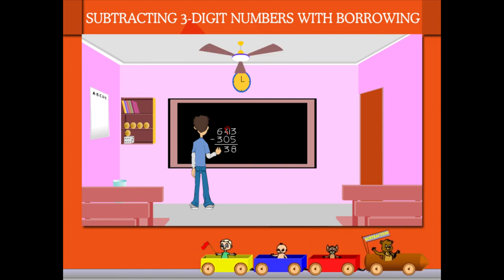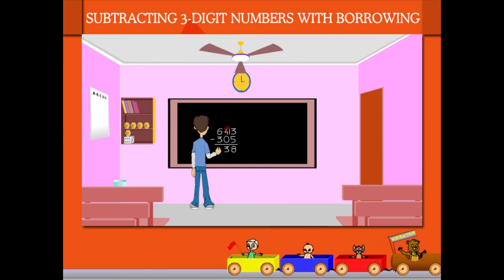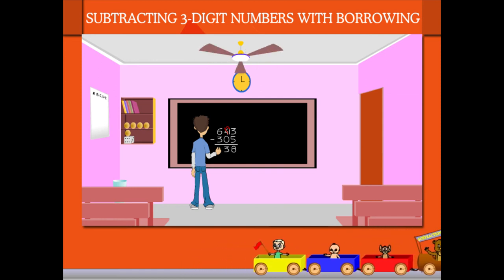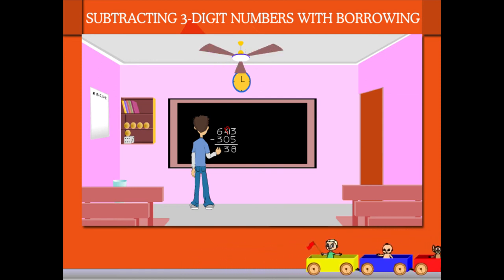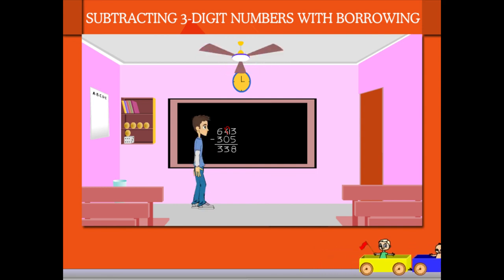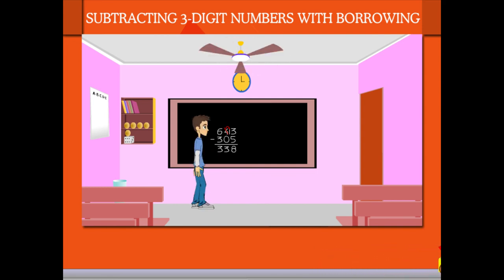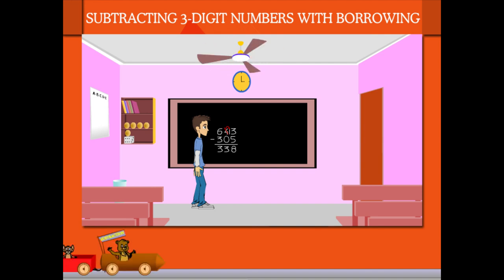In the hundreds, 6 hundreds minus 300 gives 300. The answer is 3 hundreds, 3 tens, and 8 ones, or 338.